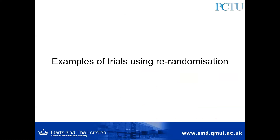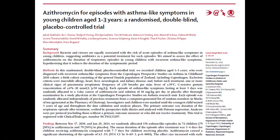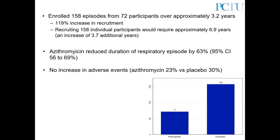Here are some examples. The first trial looked at an intervention to manage symptoms for children with acute asthma exacerbations, where children could be re-enrolled and re-randomized for each new exacerbation. This trial enrolled 158 episodes from 72 participants — by using re-randomization they doubled the number of episodes enrolled compared to allowing only one episode per patient, and completed recruitment almost four years earlier than if they had tried to recruit 158 individual participants. They found the intervention reduced the duration of the respiratory episode and there was no increase in adverse events.